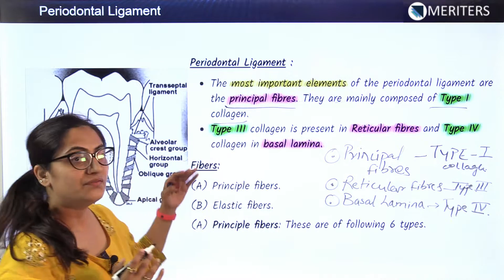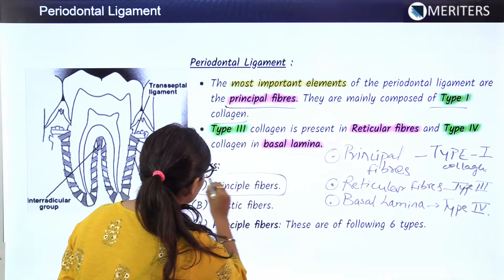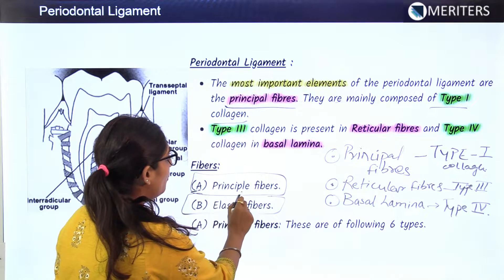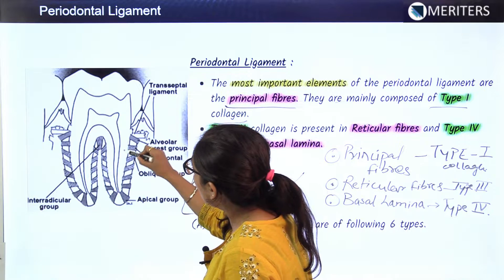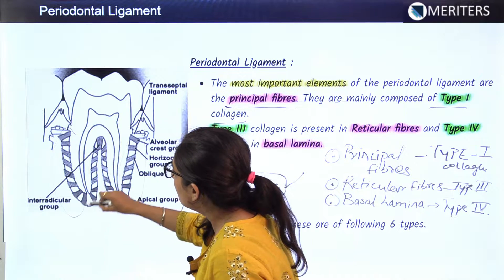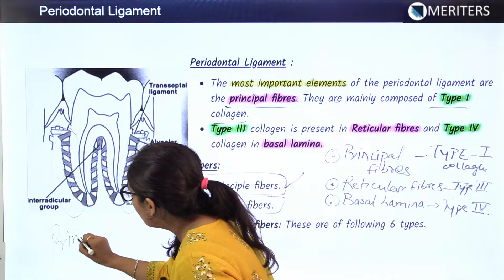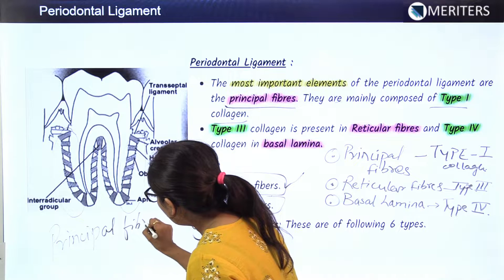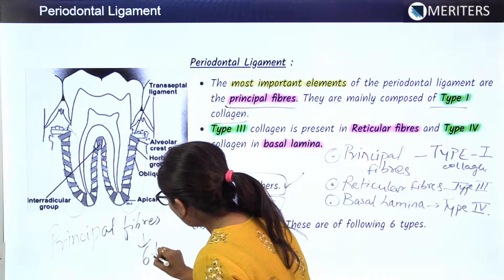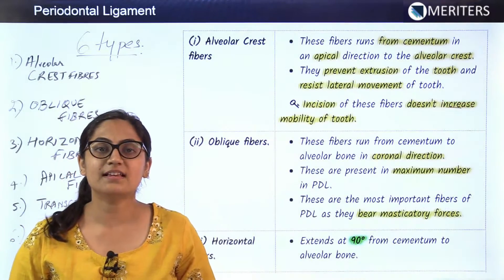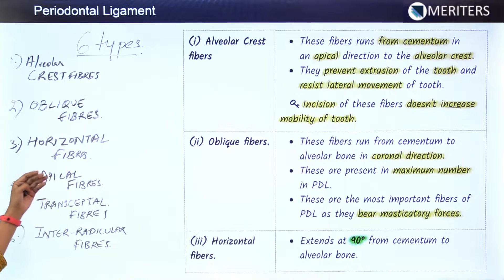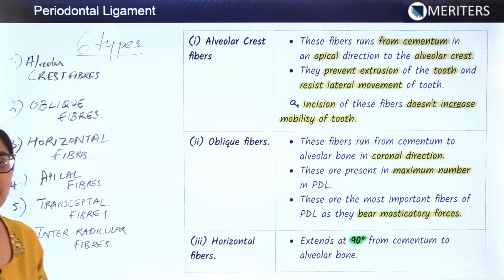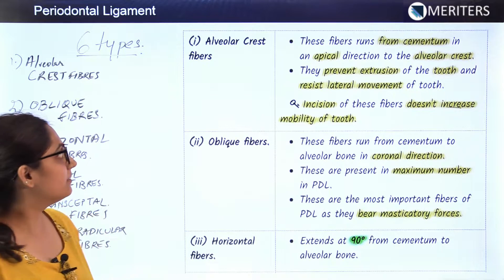We'll discuss fibers in detail, beginning with the principal fibers. The other group is the elastic fibers. Principal fibers include all components acting in the tooth structure and are further divided into six types: alveolar crest fibers, oblique fibers, horizontal fibers, apical fibers, transeptal fibers, and interradicular fibers.